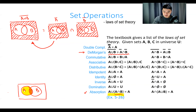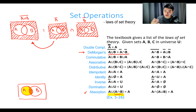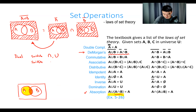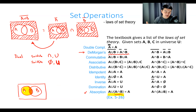Just as the laws of logic had two columns, the laws of set theory have dual forms. To find the dual, swap intersections with unions and swap the empty set with the universe (bold U). So any law involving union has a dual law involving intersection, and vice versa.